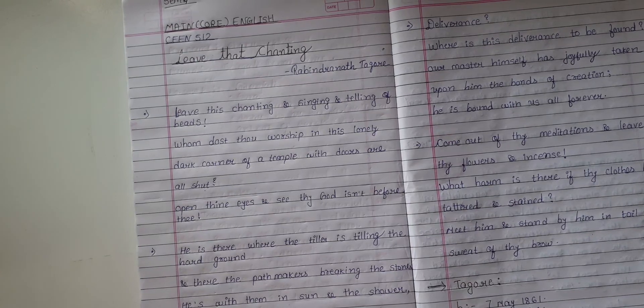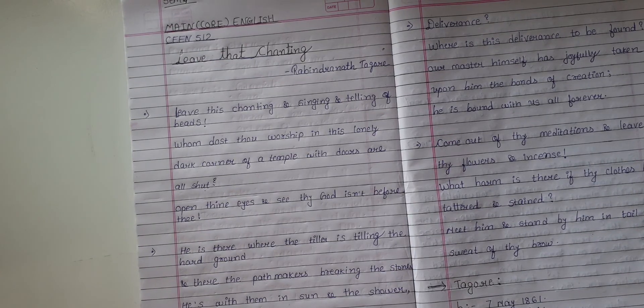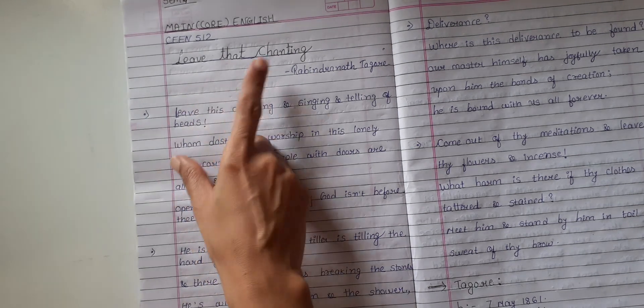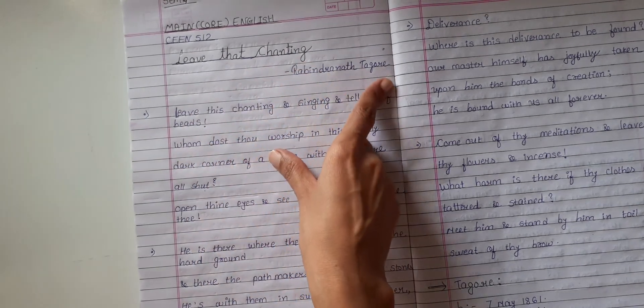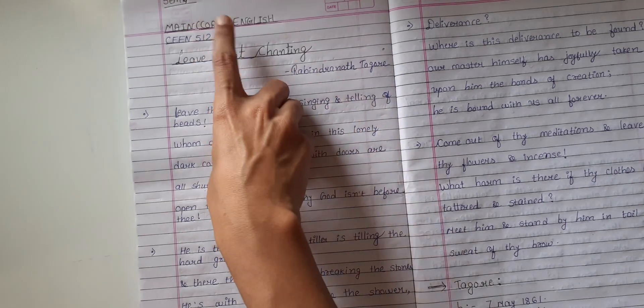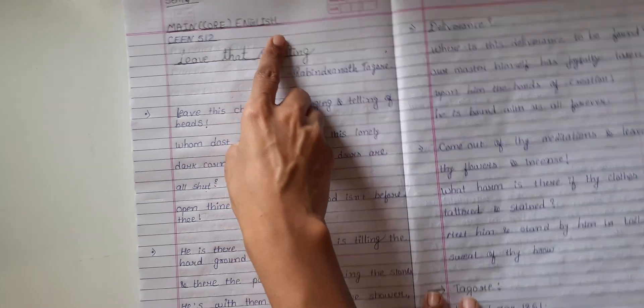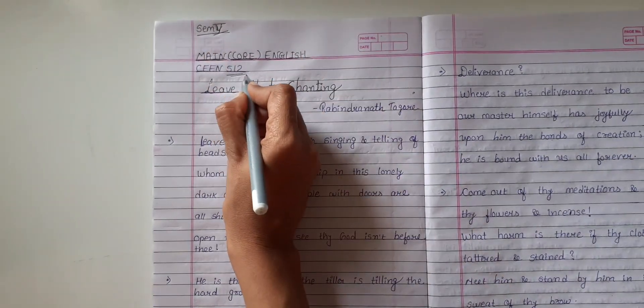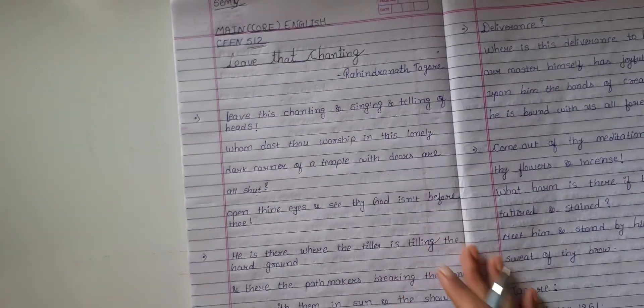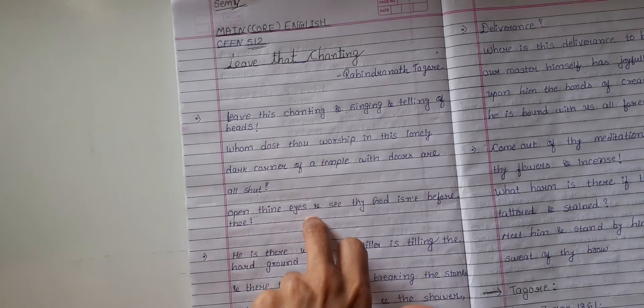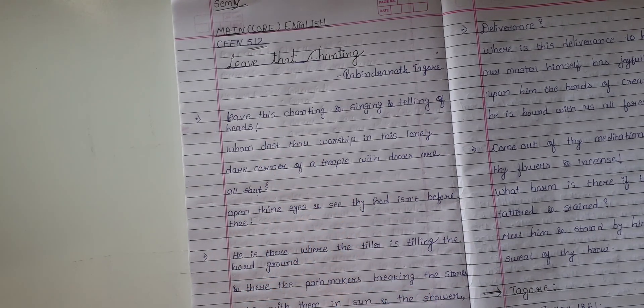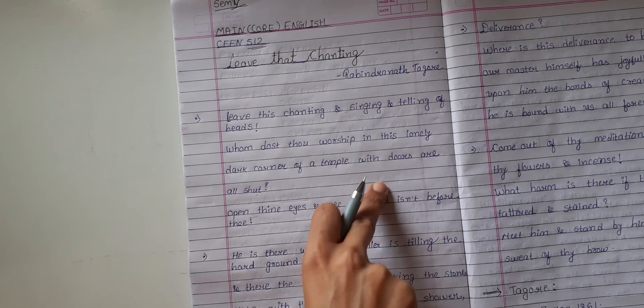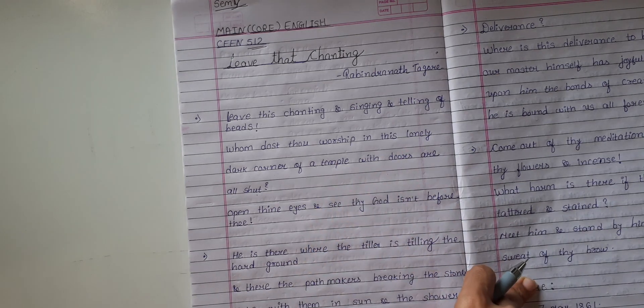Hello everyone, welcome back to my channel. I am Murvi Joshi and today we are going to discuss about summary of the poem Leave This Chanting by Rabindranath Tagore. This content belongs to Main English students or Core English paper students, sem number five, and the paper code is 512. Today we will discuss or explain the real text of the poem, after that we will discuss about Rabindranath Tagore.